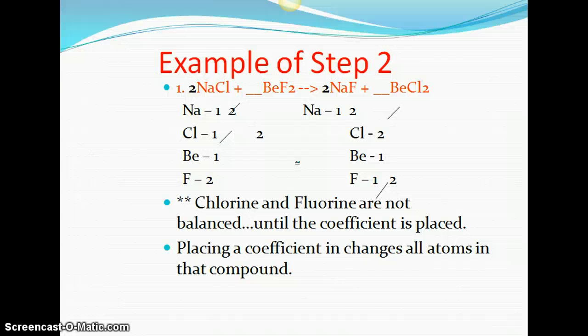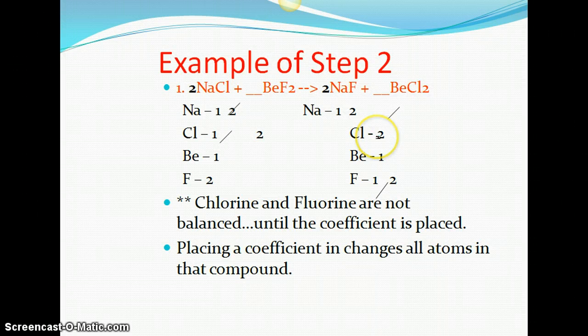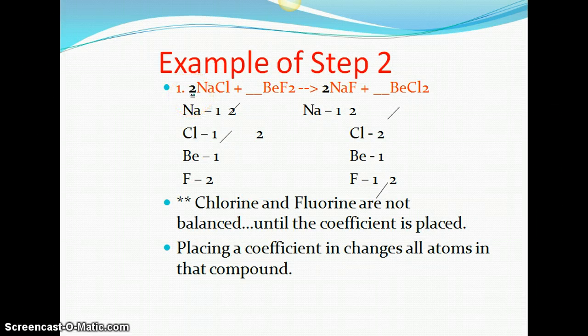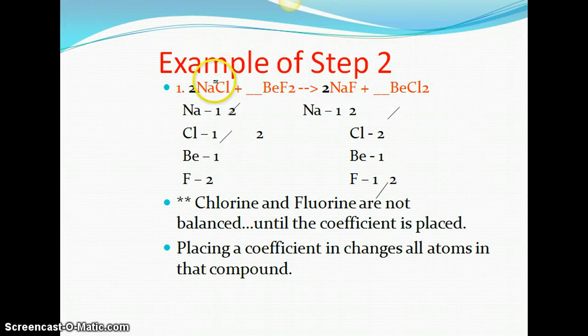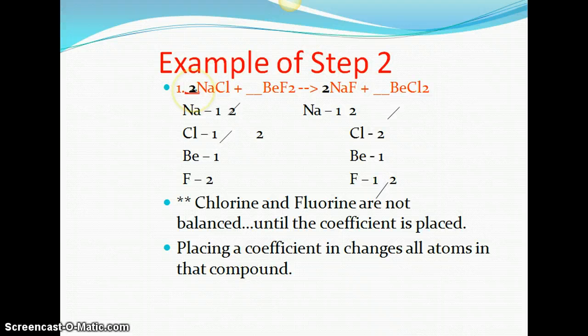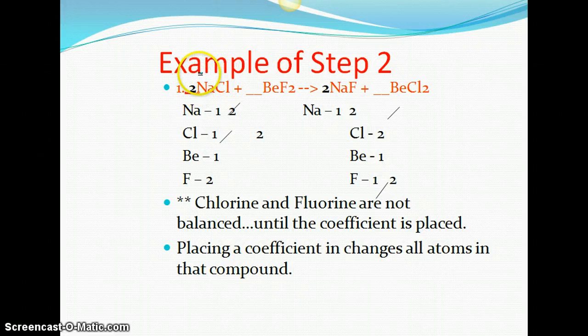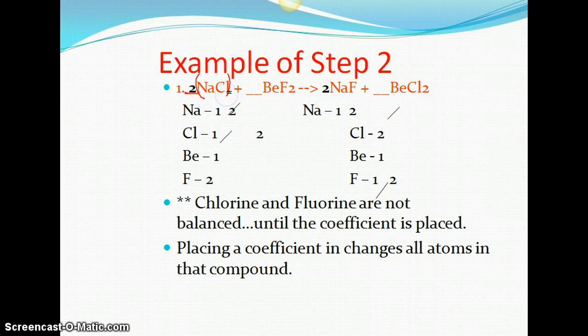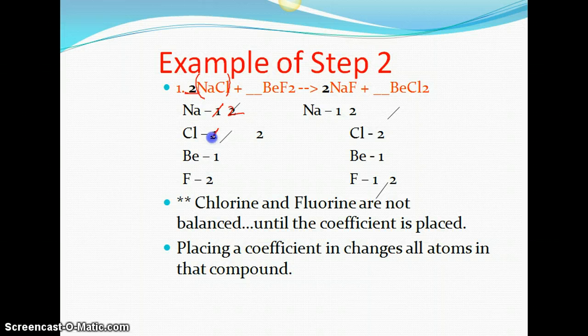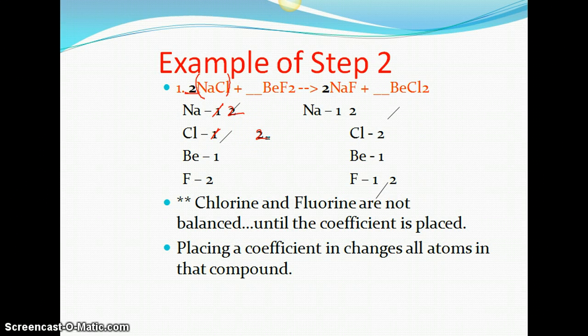So here's an example. We want to balance chlorine. Chlorine had two on the right side and only one on the left side, so we need to balance that. Now there's a couple rules. We can never put a number in between a compound. If you put a number, it has to go in front of the compound. So if we put a two here, because whatever we put is going to multiply by the number that we already have and we want to get to two. So two here affects both sodium and chlorine. So it's almost as if we have parentheses around here. And in math, you would distribute this two to the things that are inside the parentheses. And that's what we're doing here. So at that point, we change this sodium to two and we change this chlorine to two.